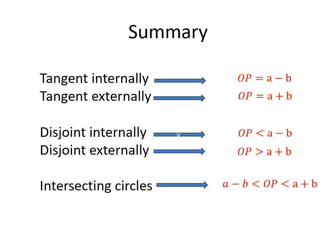As a summary, there are five relative positions of two circles: tangent internally, tangent externally, disjoint internally, disjoint externally, and intersecting. To memorize them: the equal sign means the circles are tangent; a less-than or greater-than sign means disjoint. The minus sign indicates internally, and the plus sign indicates externally.